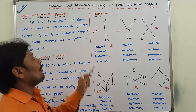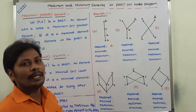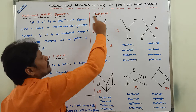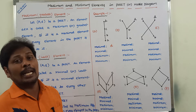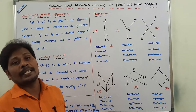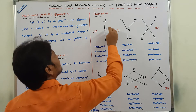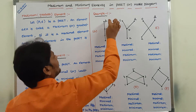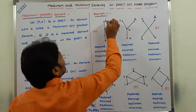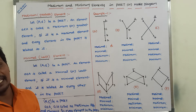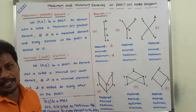Next, what is the maximum element? Element D is a maximal element. When can we say that this maximal element is called a maximum or greatest element? Every element in the poset must be related to it. Here, C is related to D — yes. B is related to D — yes. A is related to D. So all remaining elements in the poset are related to the maximal element D. Hence, we can say that D is also called a maximum element.